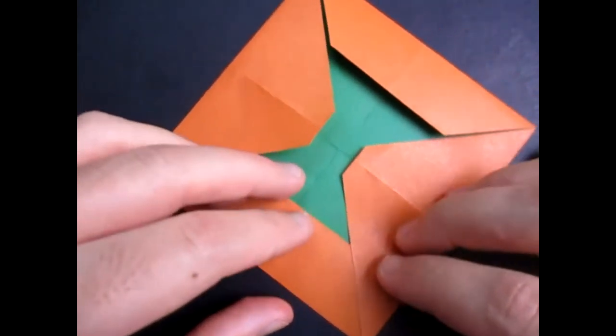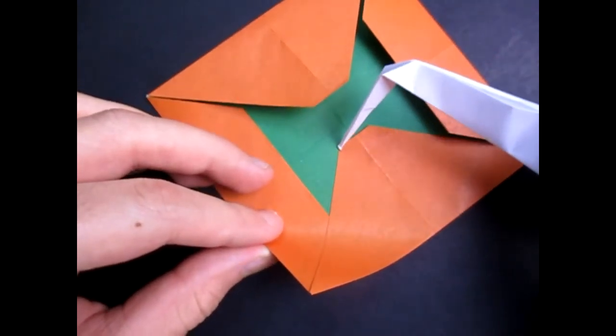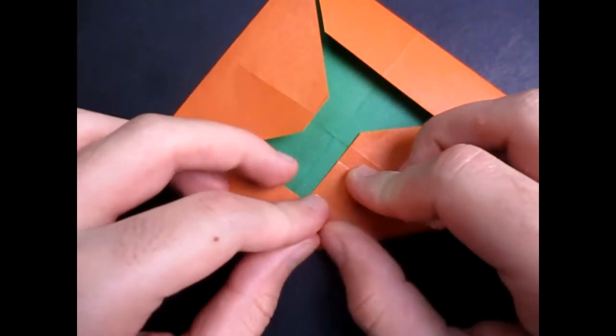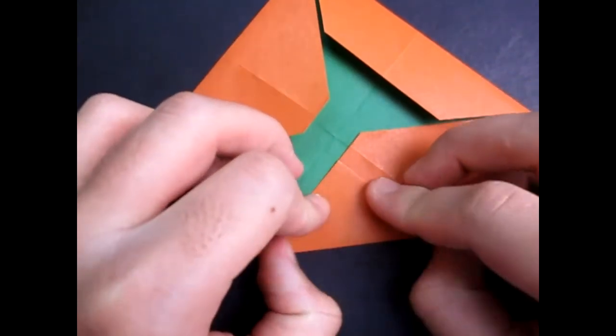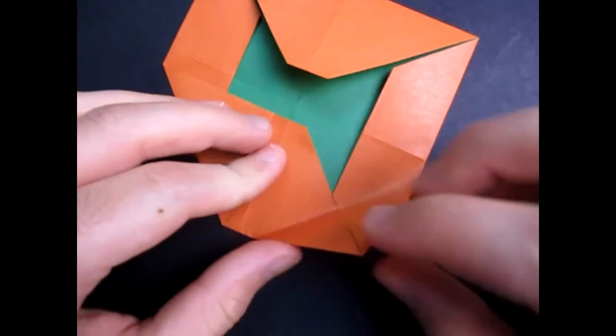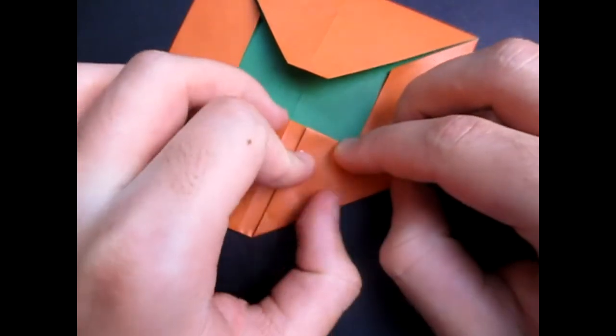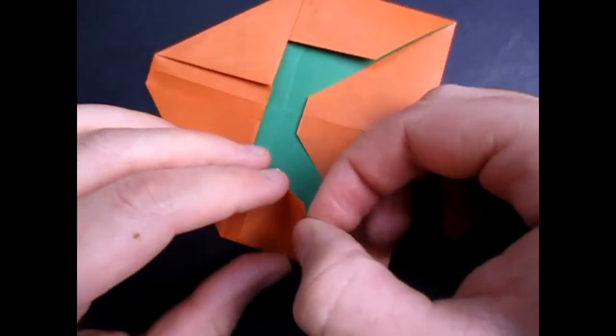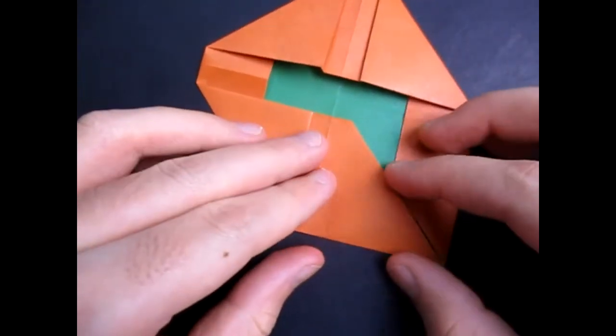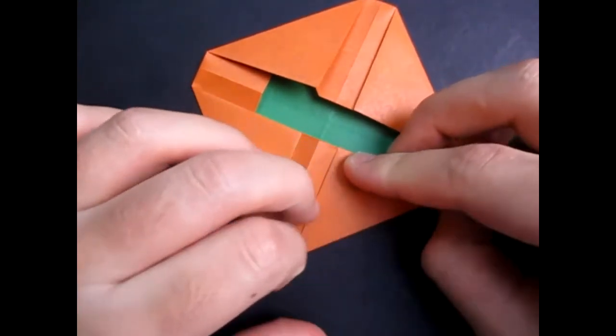Okay. So now, we're going to make it into a flicker. So we're going to take this point and we're going to fold it to this point right here. And hold the layers down so nothing slides. Like this. And repeat all the way around. So fold this point to this point.